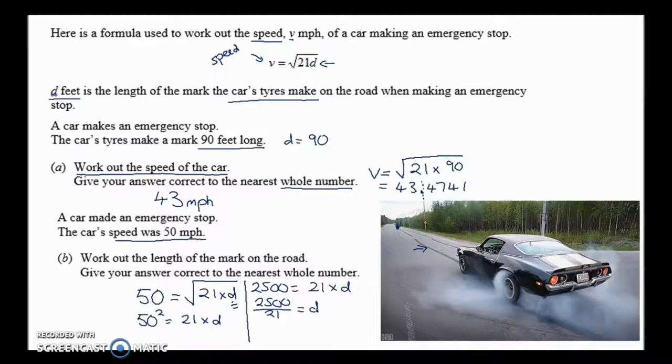2,500 divided by 21. My calculator is saying 119.04, so the answer I got for D was 119.04, to the nearest whole number it's just going to be 119 for that one. So the length of the tire mark was 119 feet long.